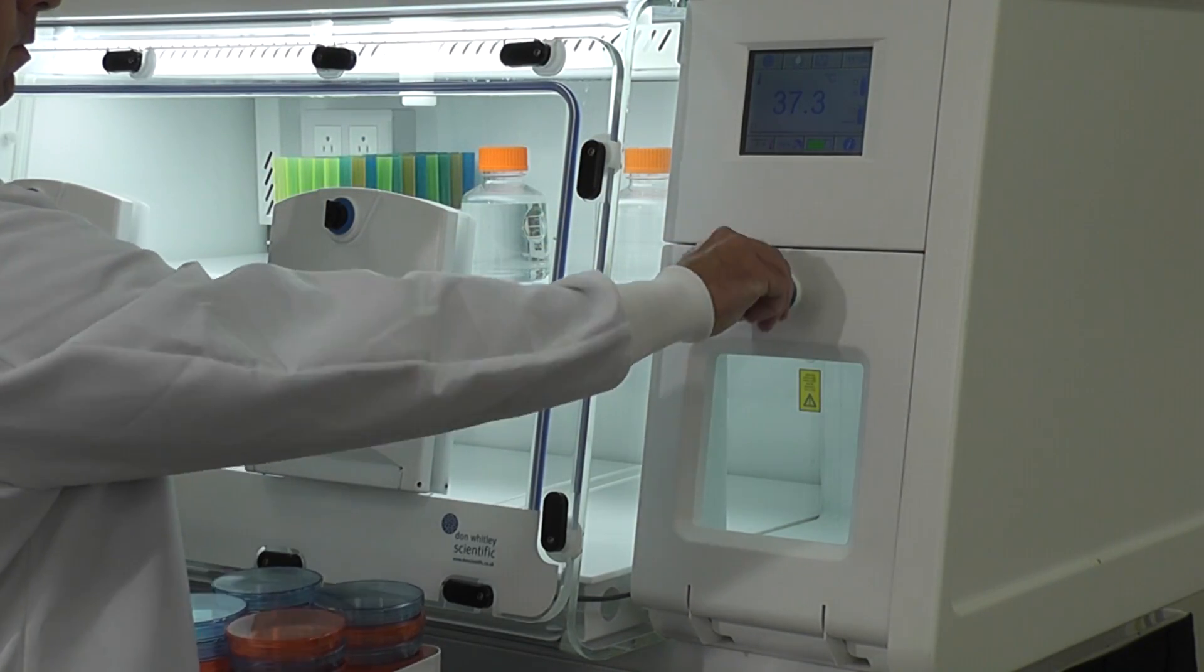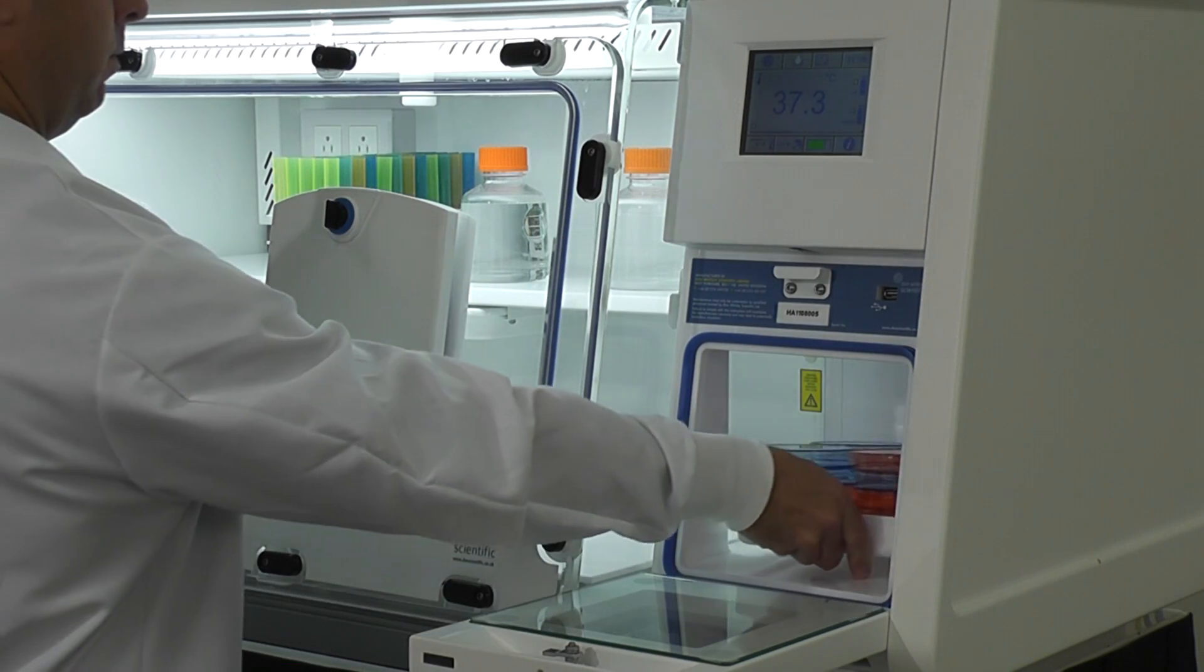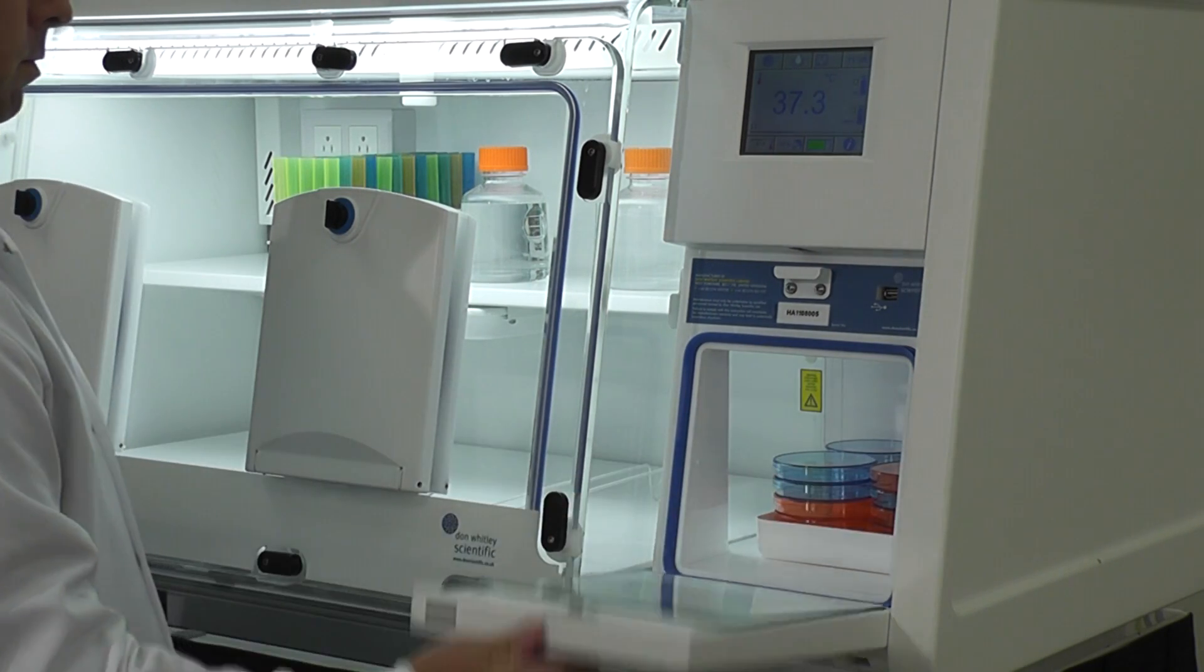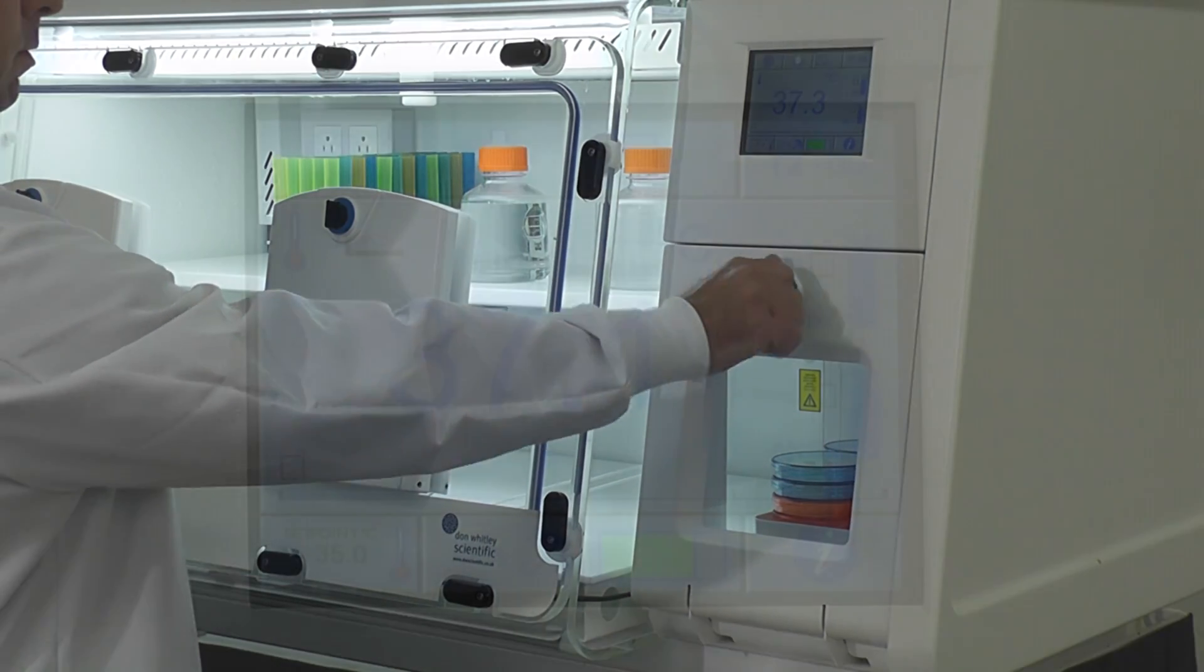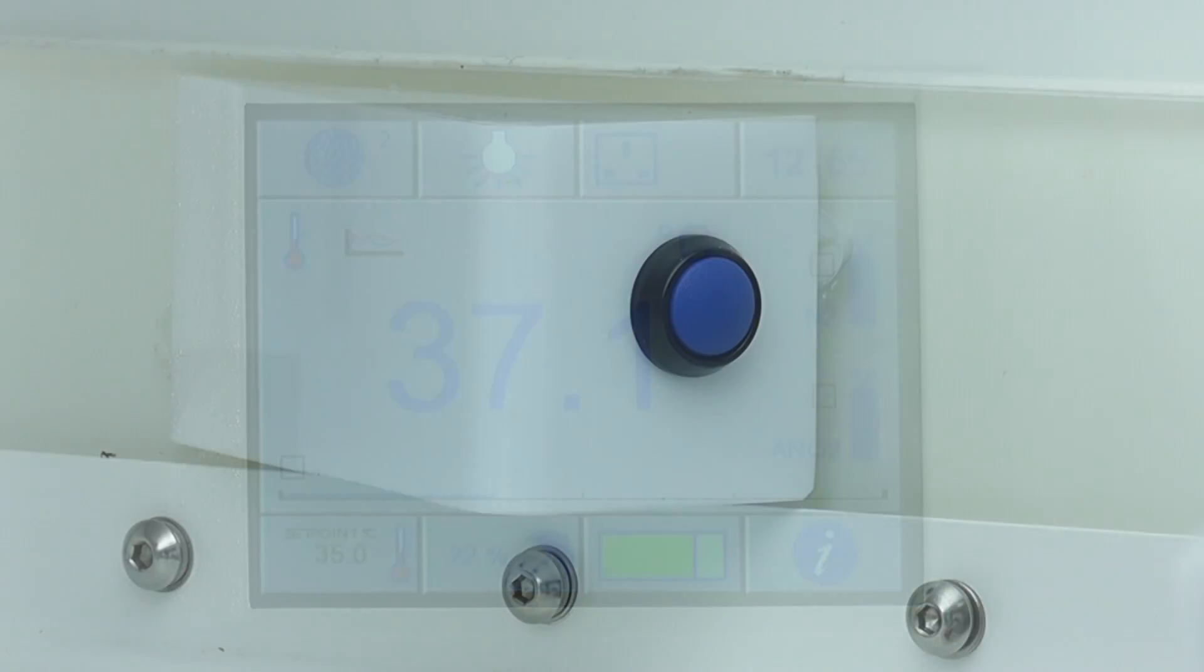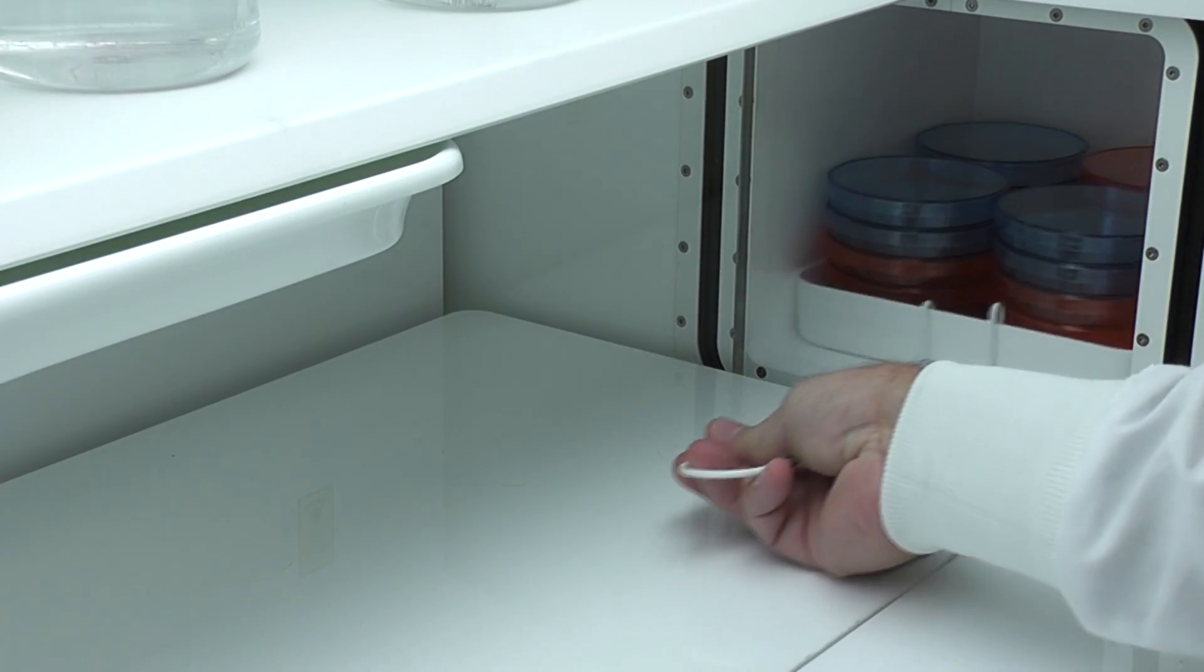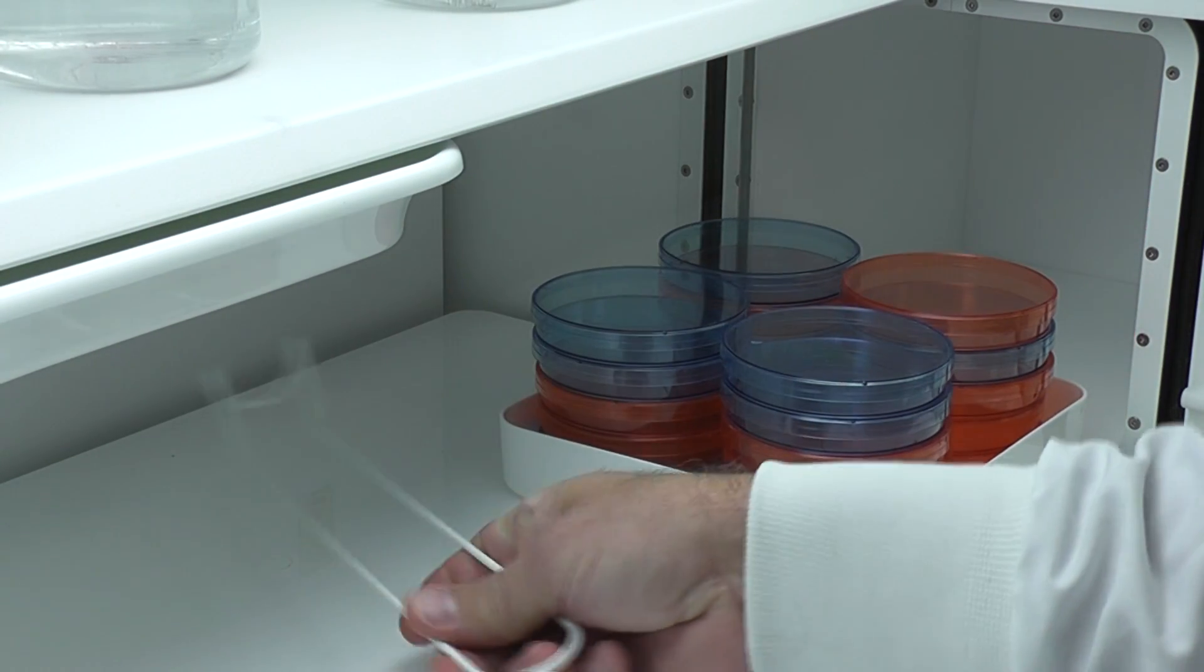Operating the airlock is very simple. Open the outer door and introduce your samples using the tray, then close the door. Initiate the airlock flush sequence by depressing the icon on the touch screen. After 60 seconds, the sequence is complete. Depress the blue button from within the workstation to open the inner door. Using the hook, pull the tray from the airlock into the workstation.